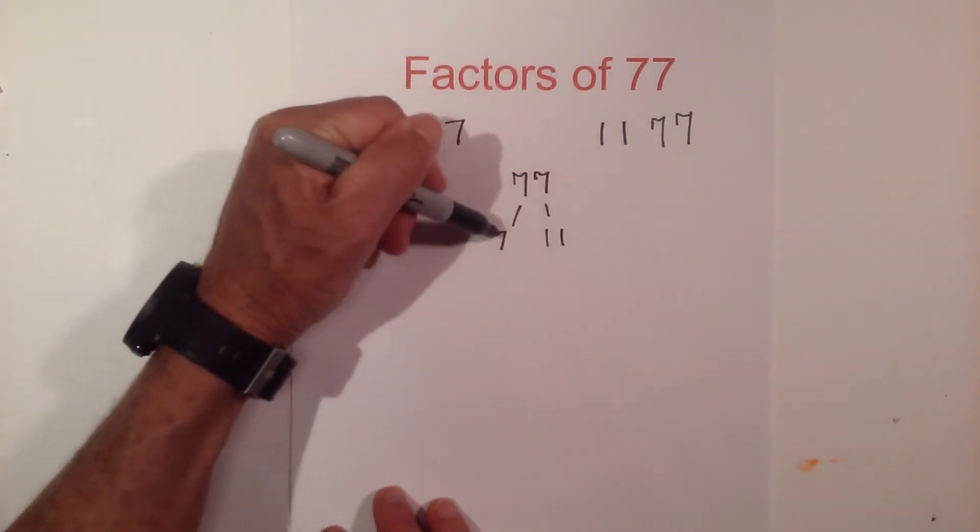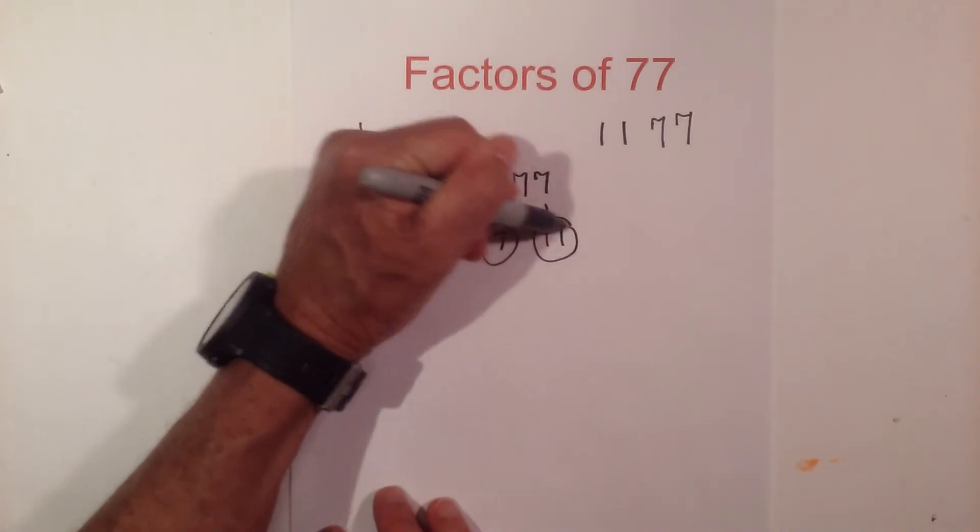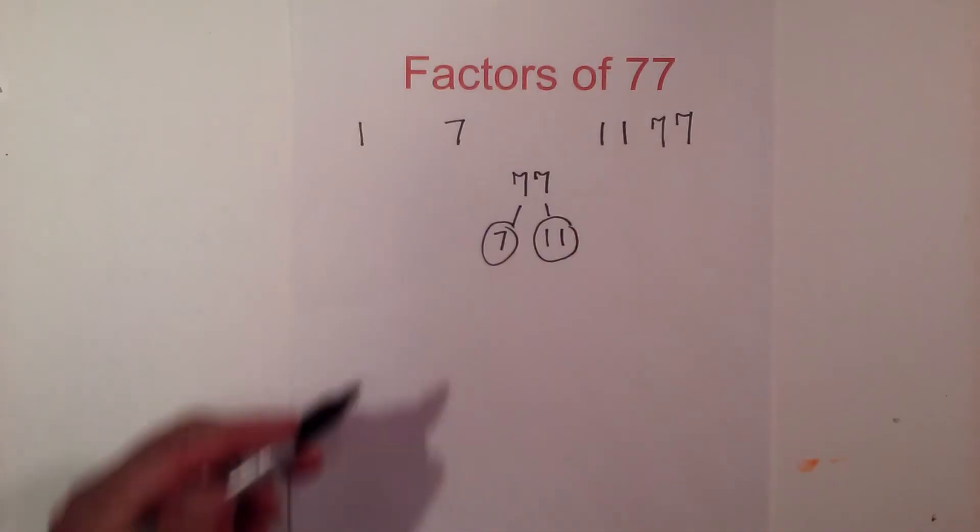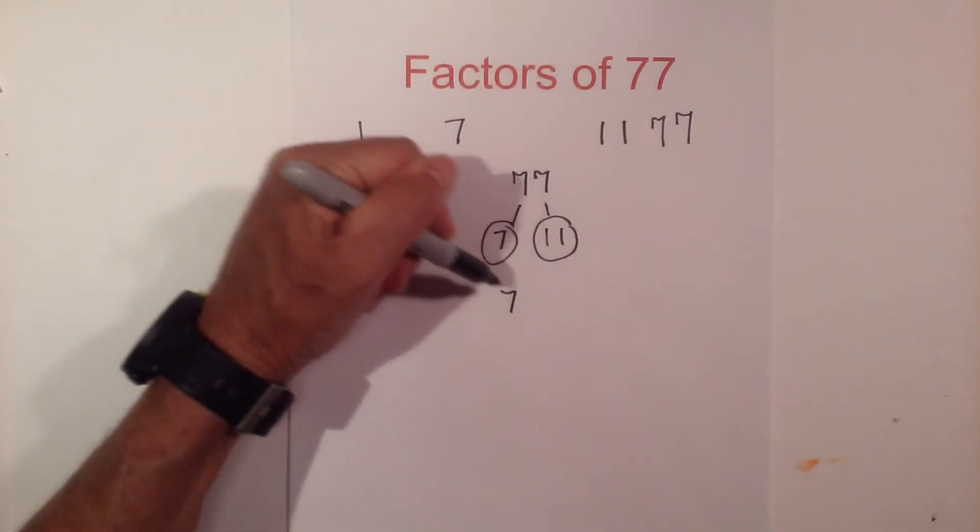goes into 77 11 times. Circle both of these because they are prime. So the prime factors of 77 are 7 and 11.